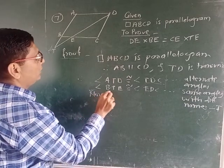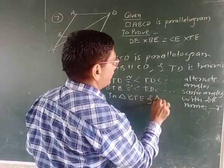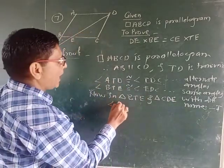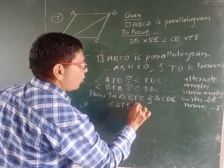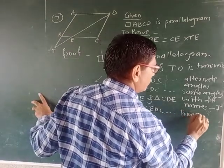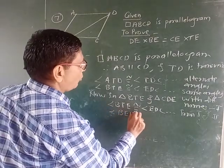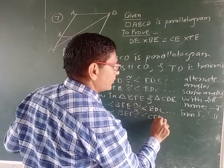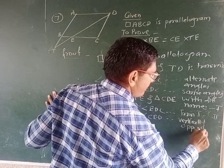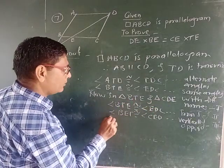Now in triangle BTE and triangle CDE, we have to compare these two triangles. Therefore, angle BTE is congruent to angle EDC from equation 1. This is equation number 2 and 3. From equation number 2 and 3, these two triangles are similar.